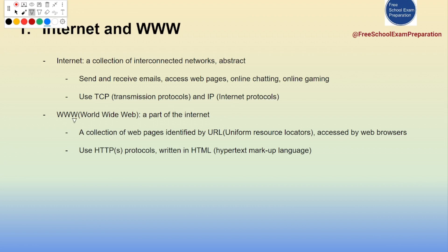For the WWW, users can use it to visit websites using web browsers. Some examples are Google Chrome, Microsoft Edge, and Firefox. We'll also talk about HTTP protocols and HTML. HTML was mentioned in lecture one — hexadecimal digits are used to represent colors in HTML. Web browsers need to translate HTML and display the content to users. We'll talk about these terms in more detail in the next slides.